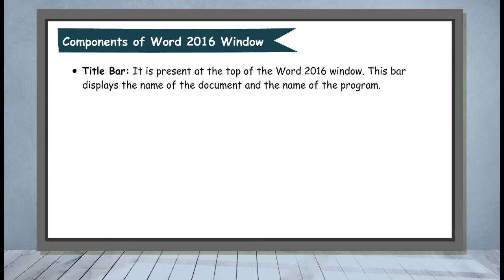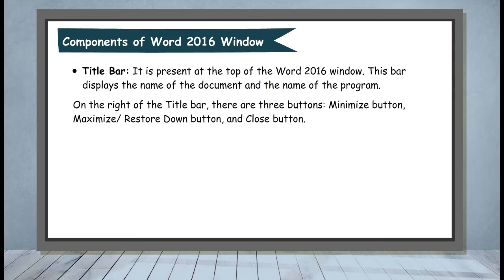Title Bar. It is present at the top of the Word 2016 window. This bar displays the name of the document and the name of the program. On the right of the Title Bar, there are three buttons: Minimize Button, Maximize or Restore Down Button, and Close Button.